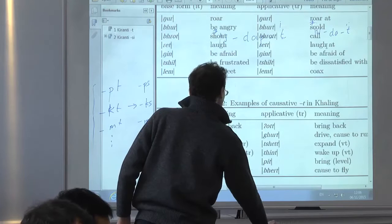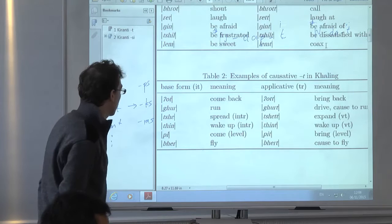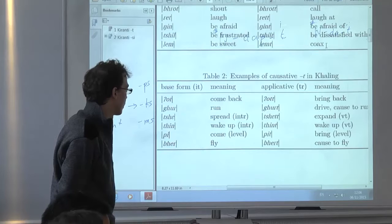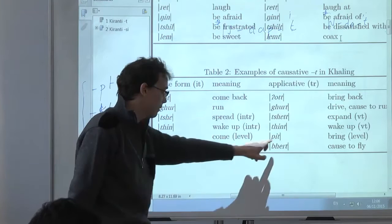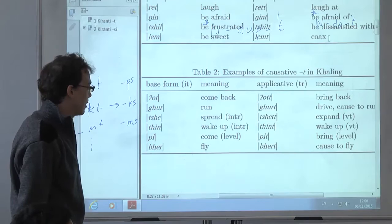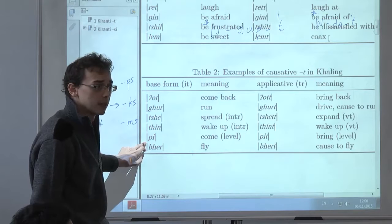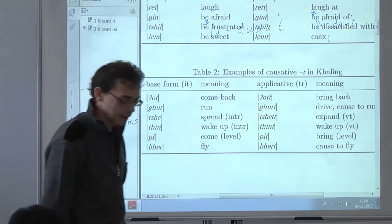The causative T can also be used in Kali to express causative. This one is interesting because you have the only verb with a T applicative in Jarogic from a verb, and it's cognate with this one. So this is evidence that this derivation has some degree of antiquity.